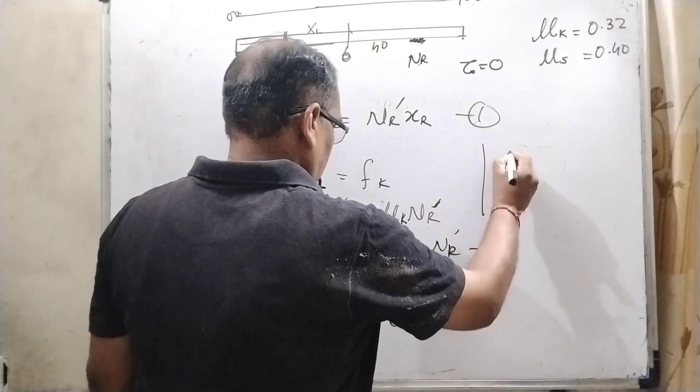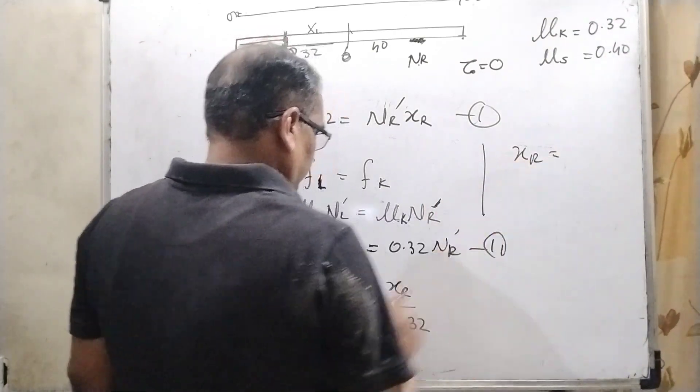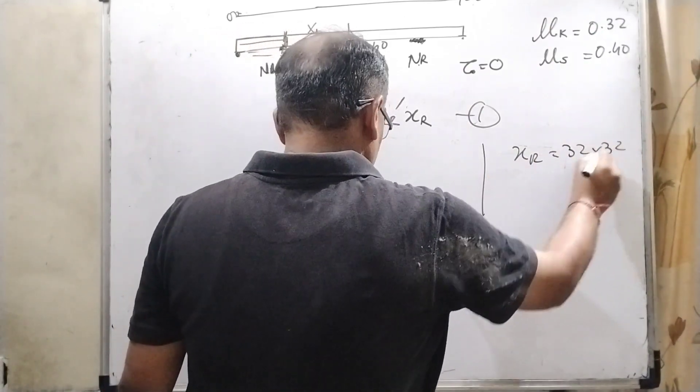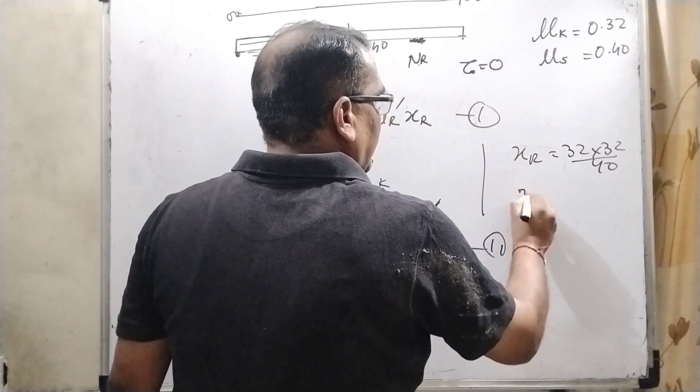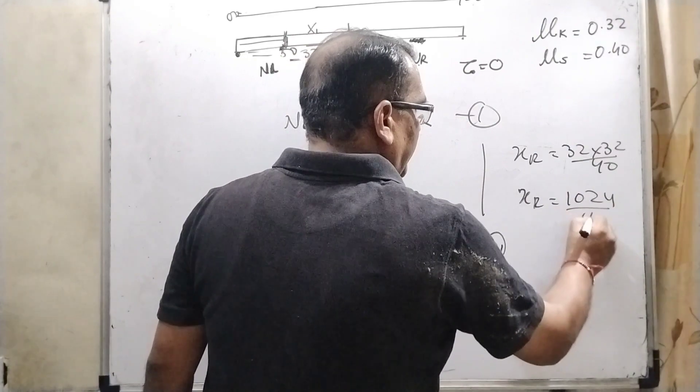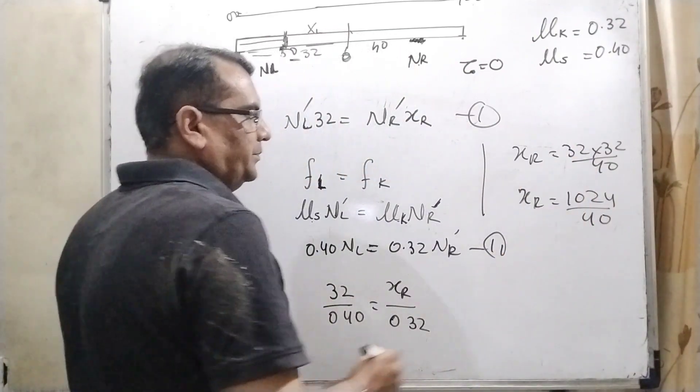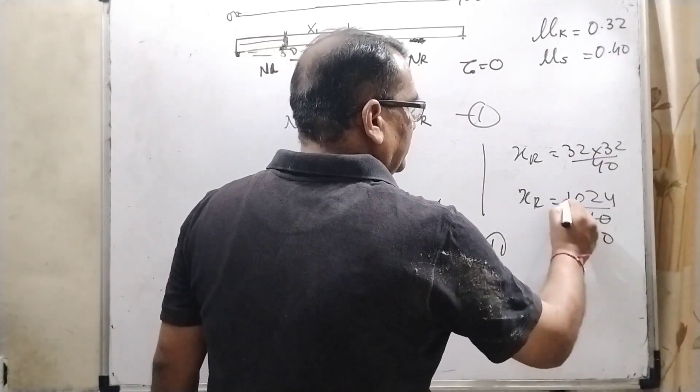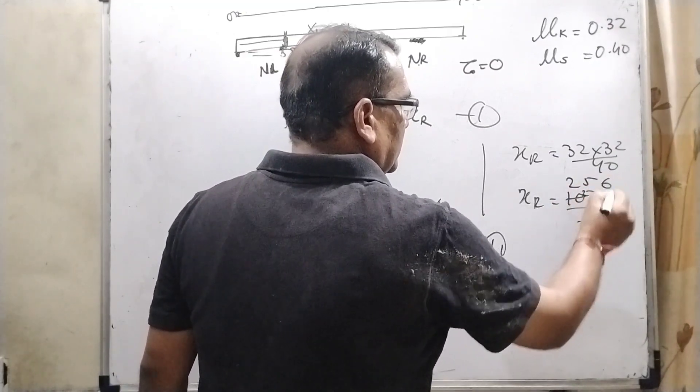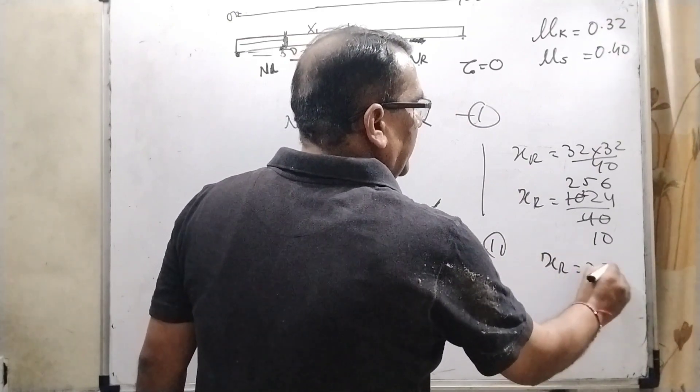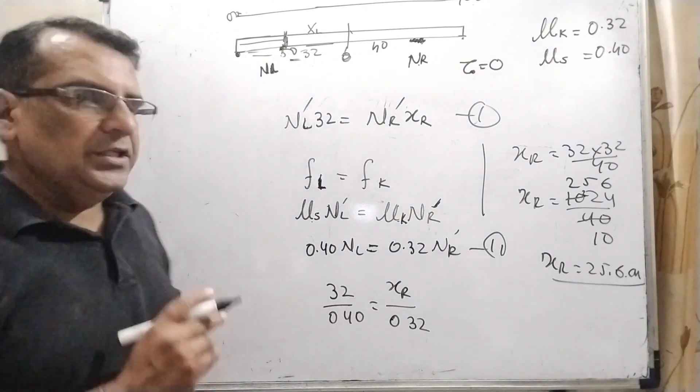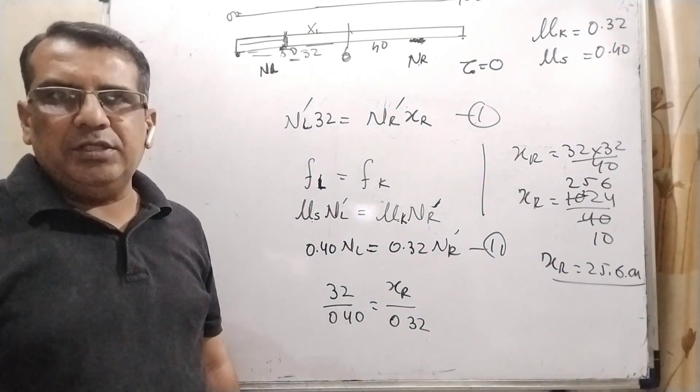Now XR = 0.32, so 32 × 32 upon 40. Then XR = 1024 divided by 40. Then XR = 25.6 centimeter. So it is the correct answer. I hope you understood this problem.